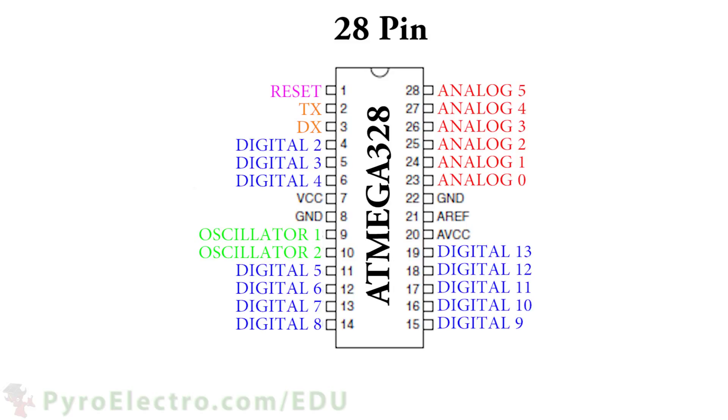The ATmega328 microcontroller is capable of digital input and digital output, as well as analog input. And as you can see here, the many digital and analog pins of the microcontroller are all assigned an identification number, like digital 2 or analog 4.